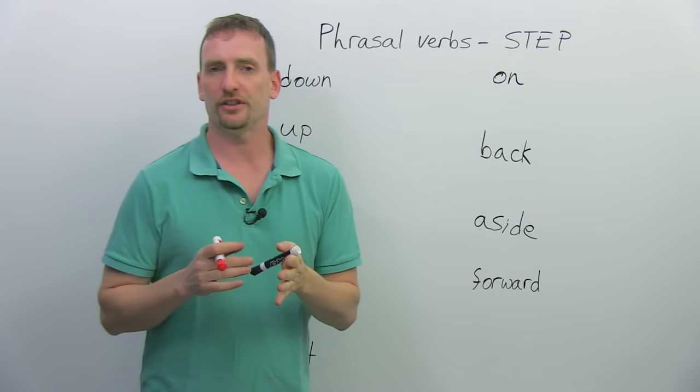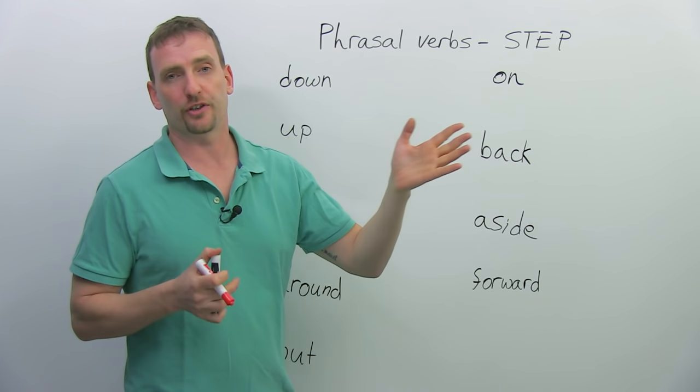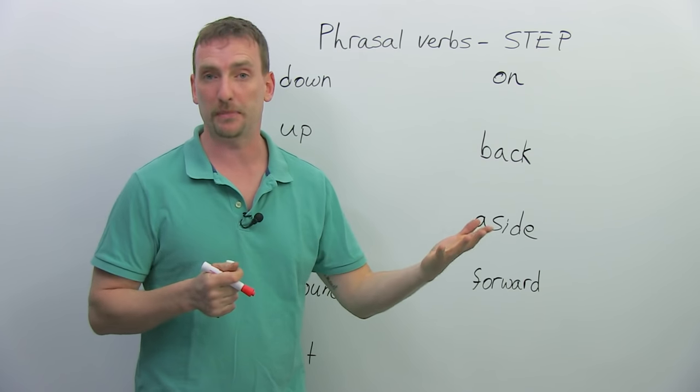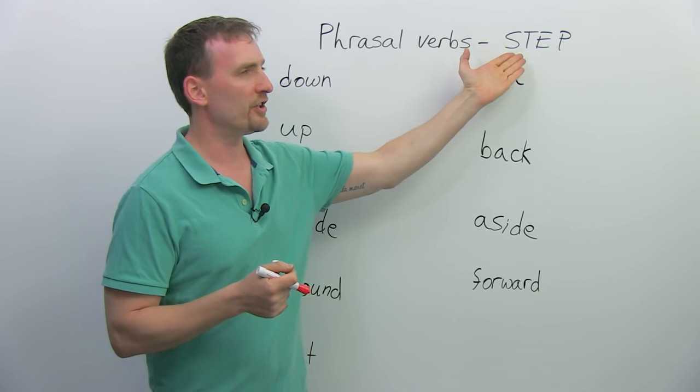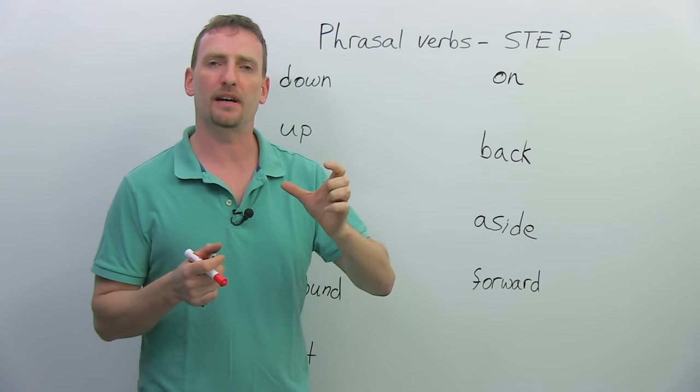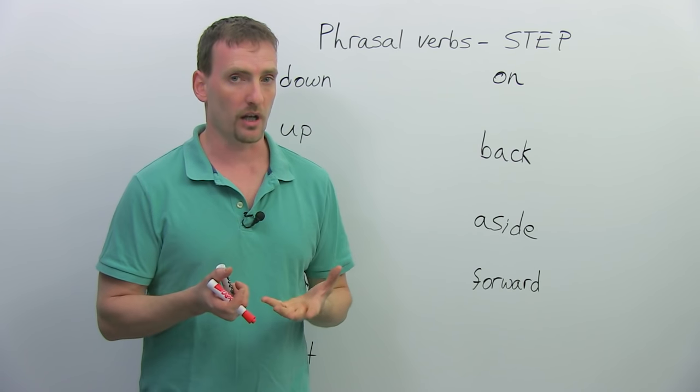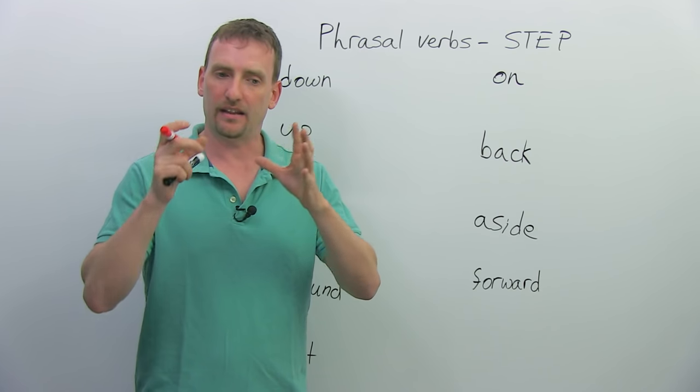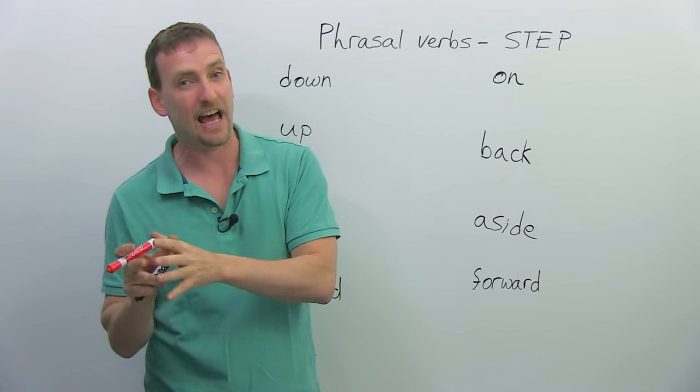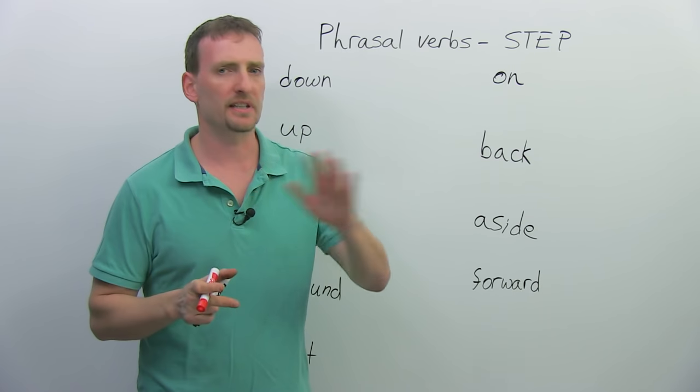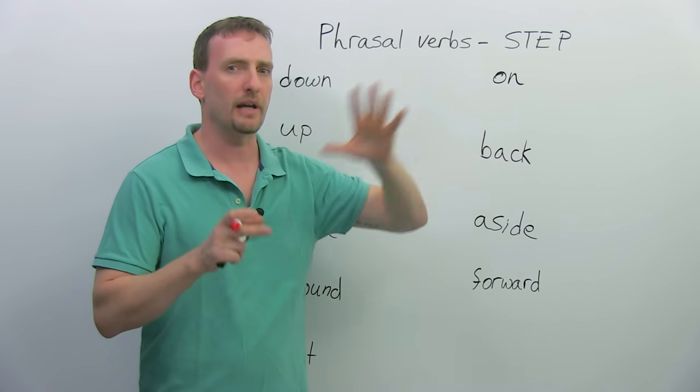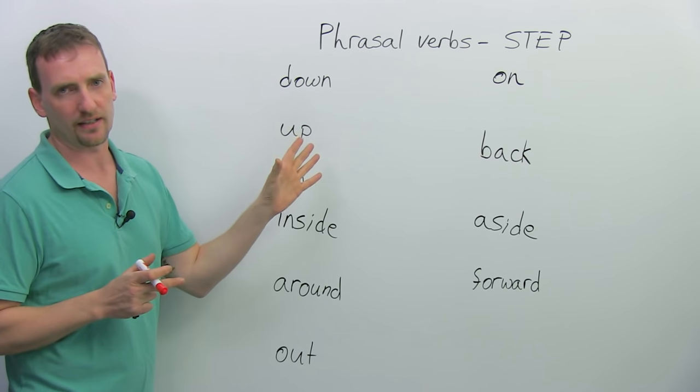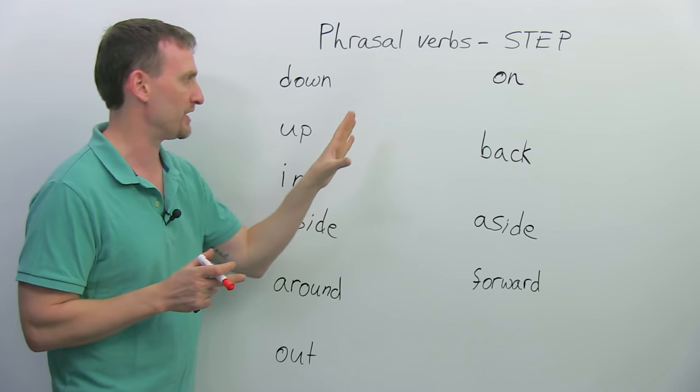Now, first of all, what you need to understand, again, phrasal verbs are verbs plus prepositions that have different meanings. And the verb step is a bit tricky because we use step as a noun as well, and we often combine it with prepositions, and the preposition and noun combination can be completely different from the verb and preposition combination. So, we're going to look at both of these when we look at these combinations with prepositions.